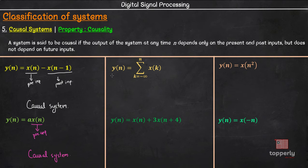Moving on to the third system, y of n equal to sigma k equal to minus infinity to n, x of k.